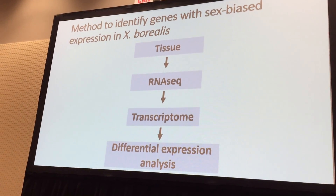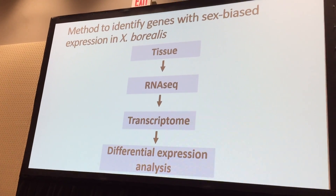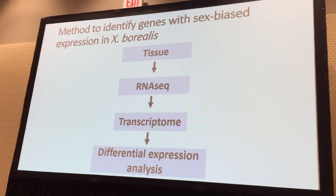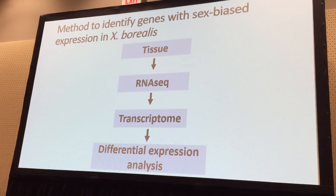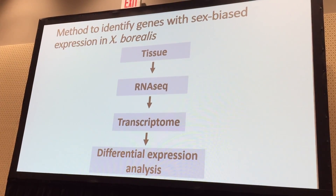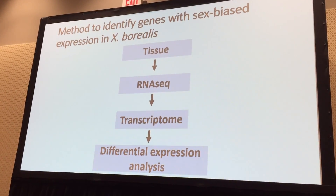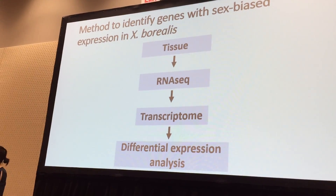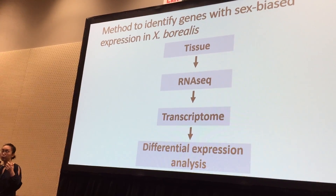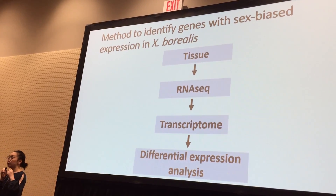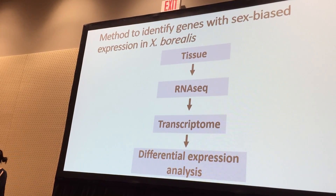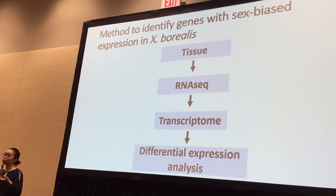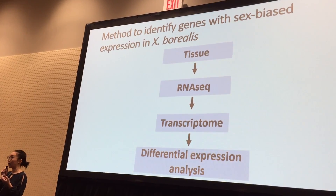To start, we extracted RNA from a borealis family consisting of four males and four females. We extracted RNA from two different tissue types: liver and gonad tissues. We sent these for sequencing, and with all the sequencing reads we built a single transcriptome. We then performed differential expression analysis between males and females for the two tissue types separately. This analysis tells us whether a borealis gene is sex-biased or not — for example, a female sex-biased gene has higher expression in females compared to males.